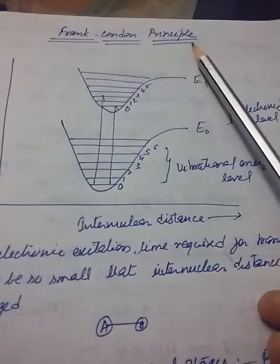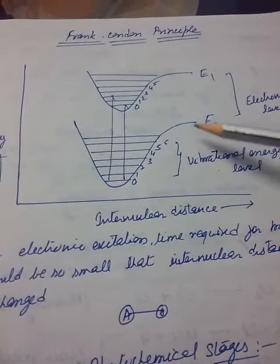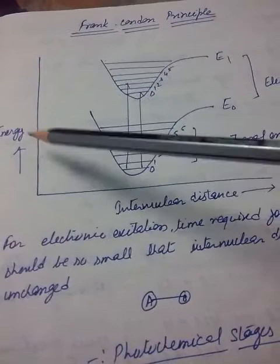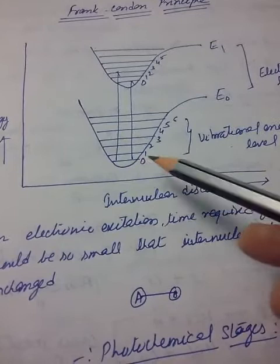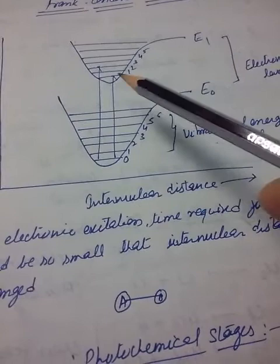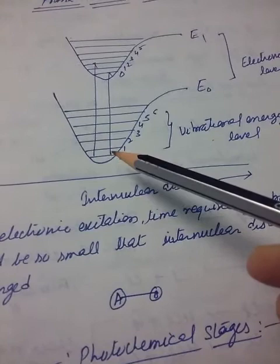Today I am discussing the Franck-Condon Principle. These are two electronic states of a molecule shown on a Morse potential energy curve. The ground state is represented by E0 and the first excited state by E1. On the x-axis is internuclear distance and on the y-axis is energy. Each electronic level is made up of different vibrational levels: V=0, 1, 2, 3 and so on, in both the ground state and the excited state.